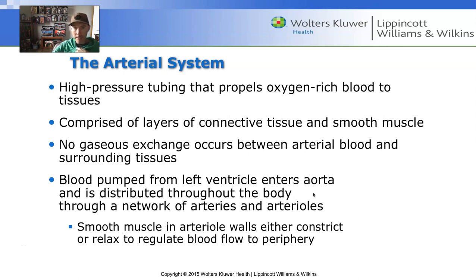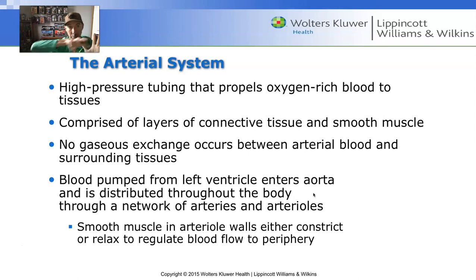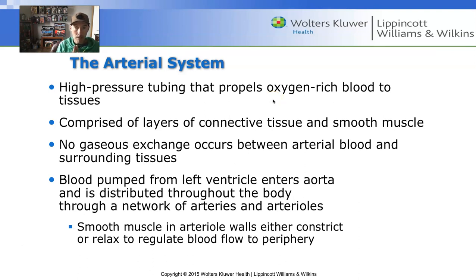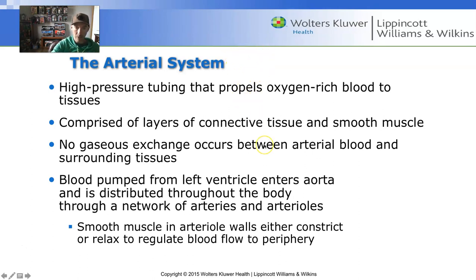The second component is the arterial system. The arterial side comes off from the ventricles and is typically a higher-pressure side because the heart is literally contracting and forcing blood into the arteries. Arteries deliver oxygen-rich blood and are composed largely of smooth muscle, which allows them to constrict, dilate, and create pressure to drive blood flow. There is no gas exchange in the arteries — they are simply a delivery mechanism. The main artery of the body is the aorta.